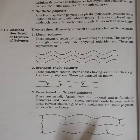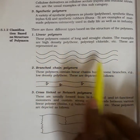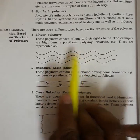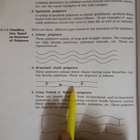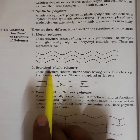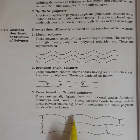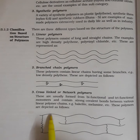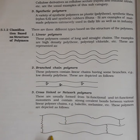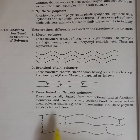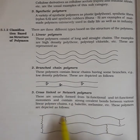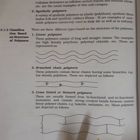Looking at the structure: in linear polymers, monomers are linearly arranged in long chains. In branched polymers, there are branches between monomers of the long chain. In cross-linked or networked polymers, the first monomer unit is branched with the second and third, and multiple branches are present throughout the structure.